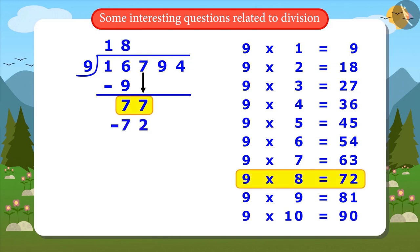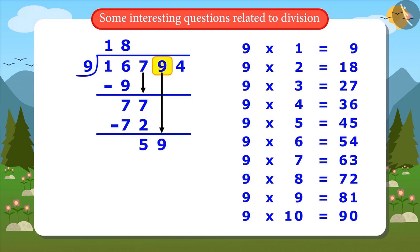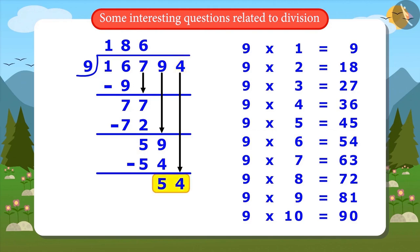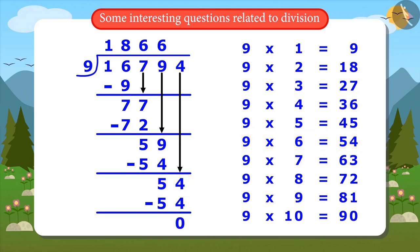Next, Vandana divides 77 by 9. Since 9 eights are 72, she subtracts 72 from 77, leaving a remainder of 5. She then divides 59 by 9 — since 9 sixes are 54, subtracting 54 from 59 leaves a remainder of 5. Finally, she divides 54 by 9 — since 9 sixes are 54, subtracting 54 from 54 leaves a remainder of 0. The whole number is divided and the answer is 1,866.